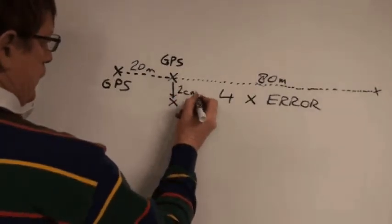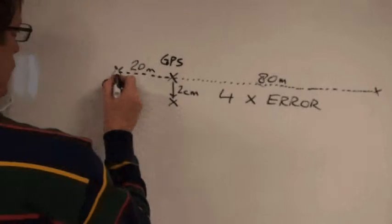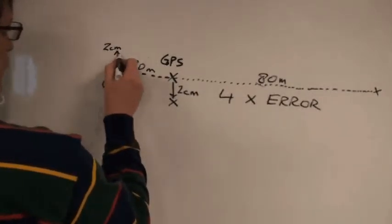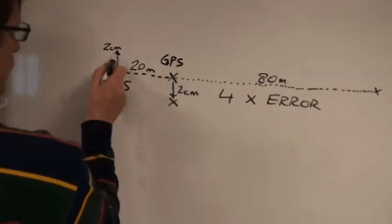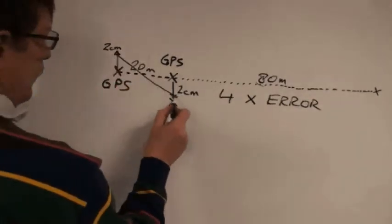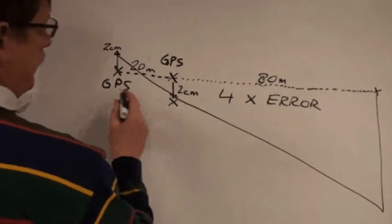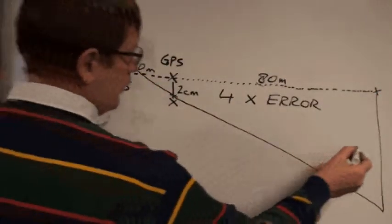As you can see, if the GPS point is off two centimeters and the first GPS point is off another two centimeters, you're going to see how the illustration propagates that error four times.